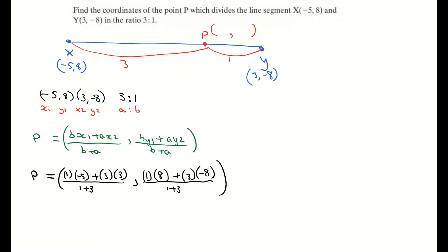Close your bracket. So P is equal to multiplying out the tops. So I'm multiplying 1 by (-5) and 3 by 3. That's giving me -5 plus 9 all over 4. Comma. And then I multiply the 1 by the 8 and the 3 by the (-8). Gives me 8 plus a negative 24 all over 4. Close your bracket.